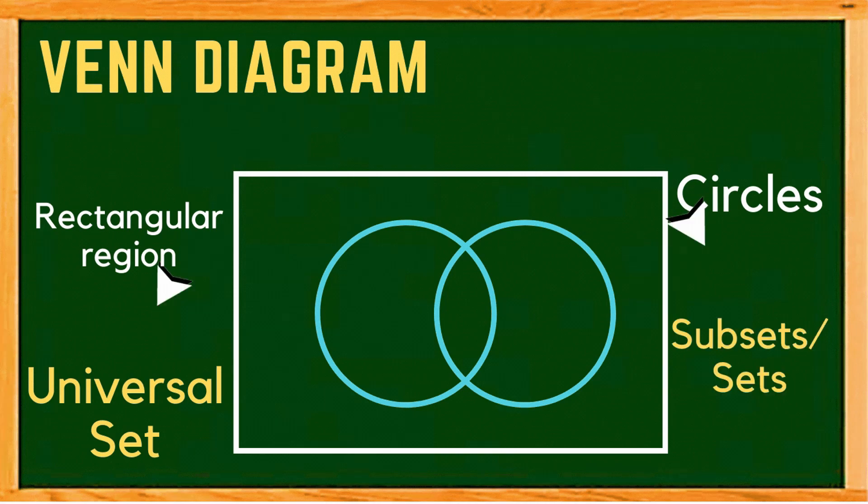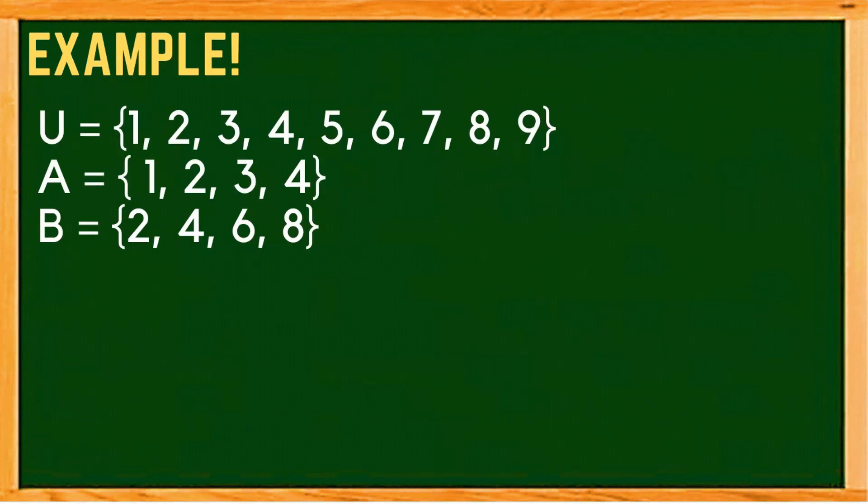For example, we have the universal set that is composed of the counting numbers less than 10, and these are 1, 2, 3, 4, 5, 6, 7, 8, and 9.